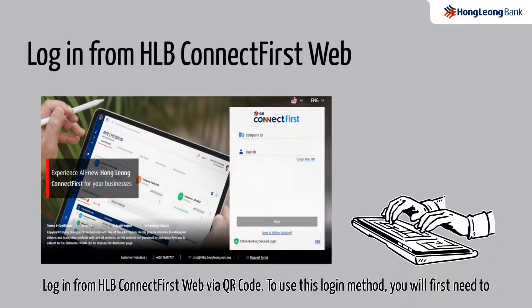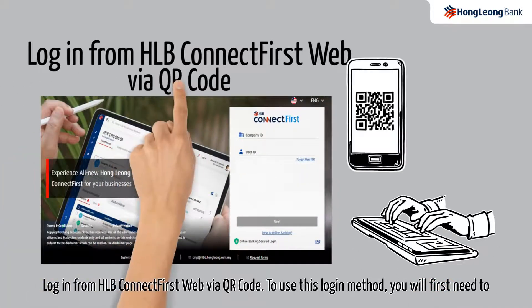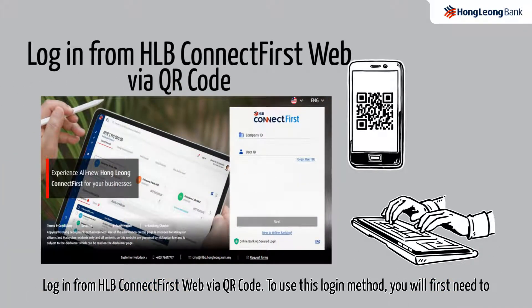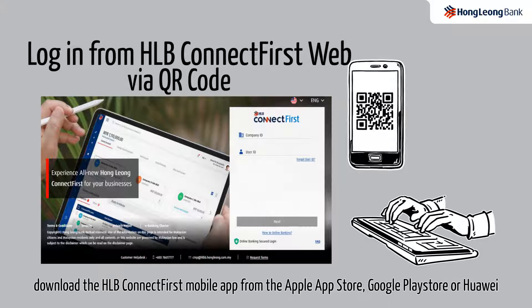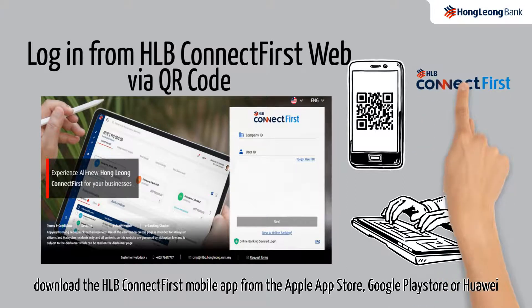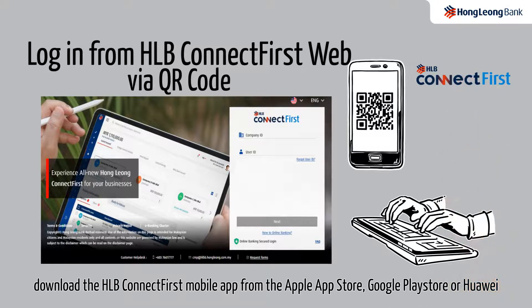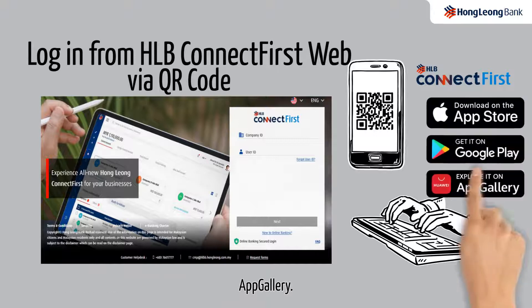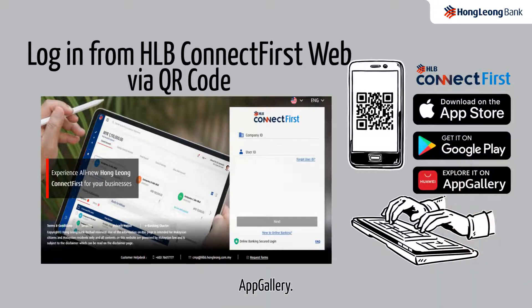Login from HLB Connect First Web via QR code. To use this login method, you will first need to download the HLB Connect First mobile app from the Apple App Store, Google Play Store, or Huawei App Gallery.